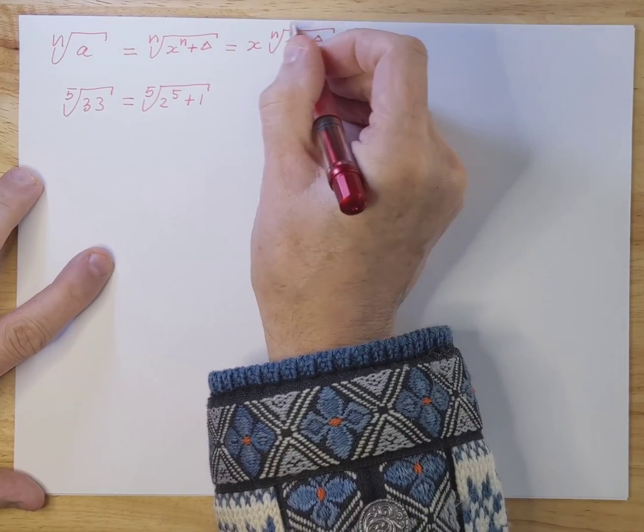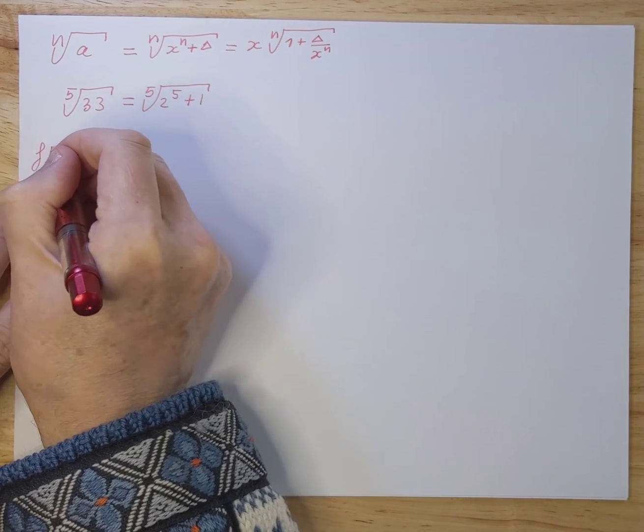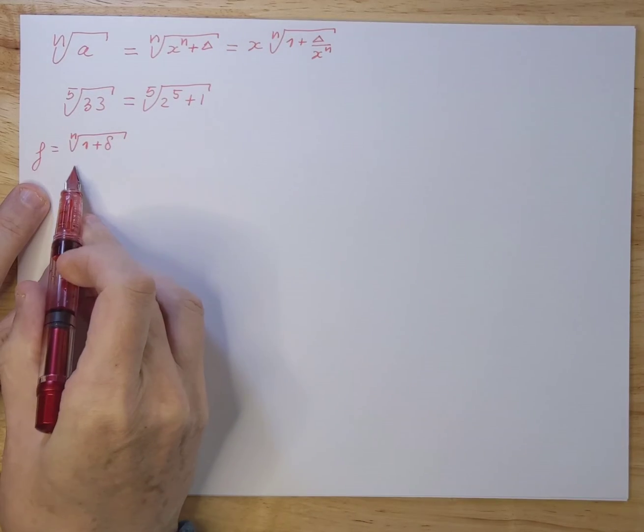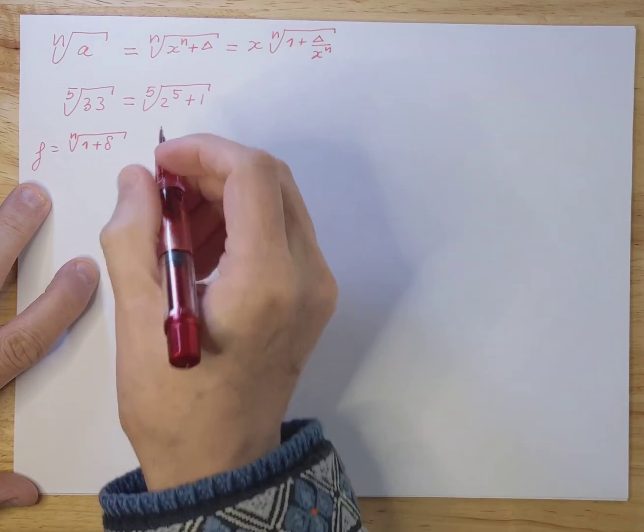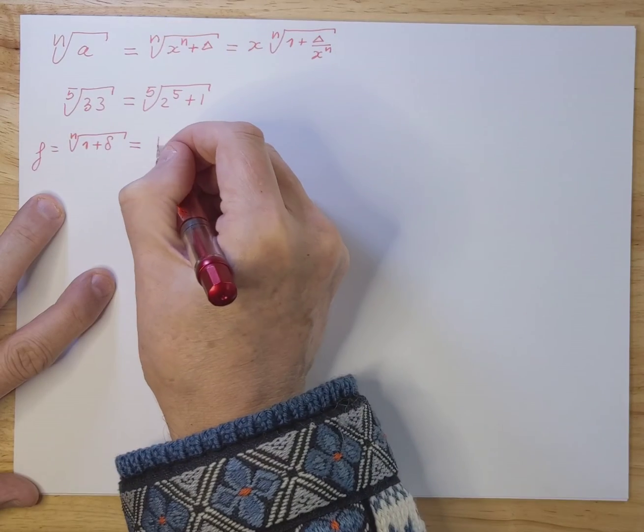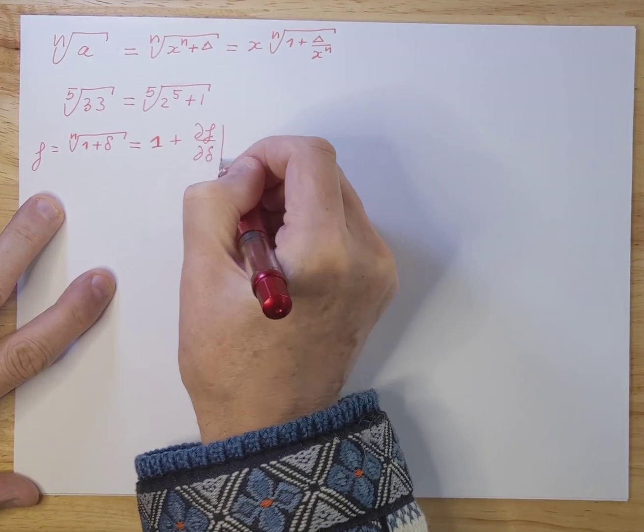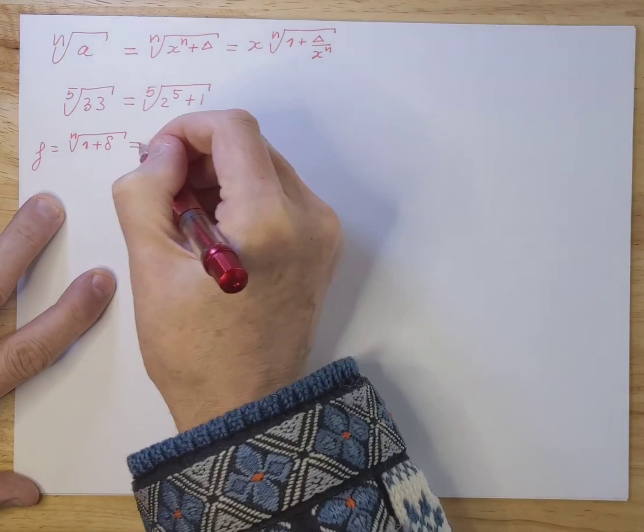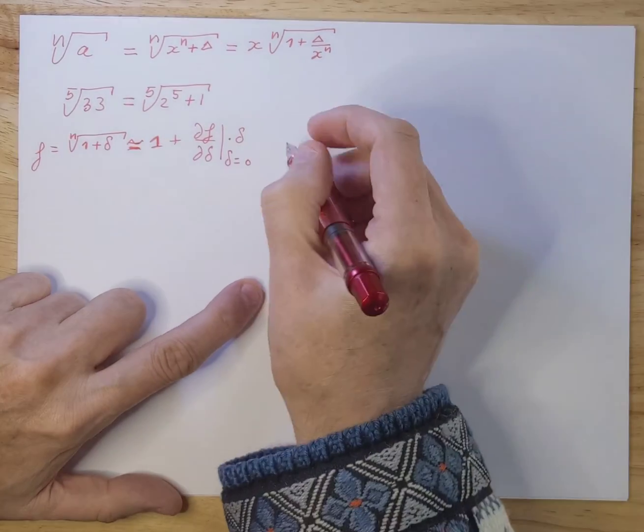And now we're going to do a Taylor expansion on this piece here. So let's take that aside and let's see what that looks like if we do a Taylor expansion on the nth square root of 1 plus a small quantity. And this is assumed to be a small quantity. If you do that you essentially get 1 plus df d delta evaluated at delta equals 0 times delta. And that's approximately equal to, if delta is small enough this is very accurate.